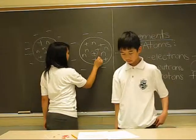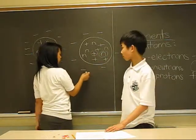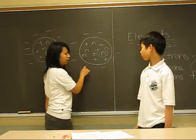Protons and neutrons are in the nucleus while the electrons are basically surrounding it on the outside.